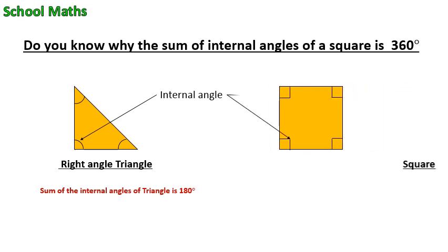You know that it is a square. The sum of internal angles of a square is 360 degrees. Do you know the reason why it is 360 degrees?